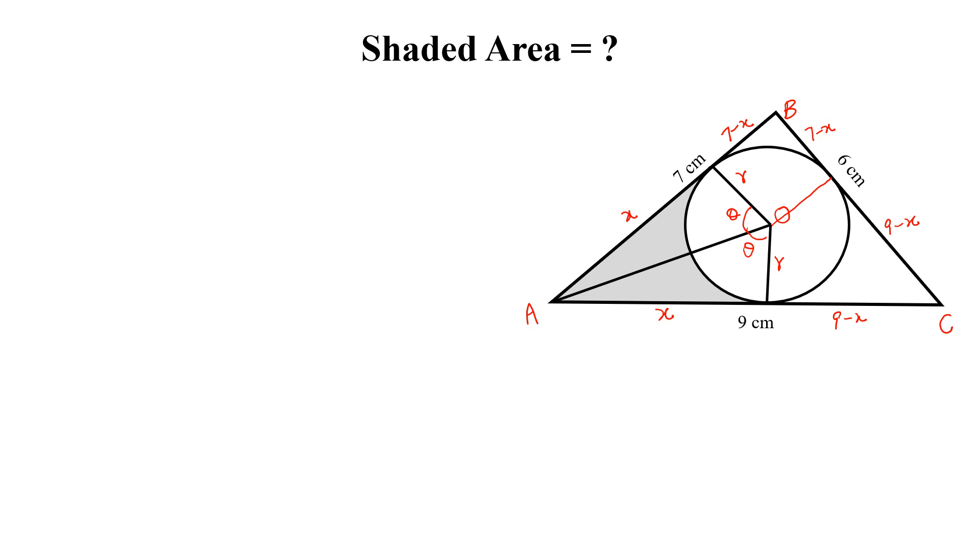Now, how can we calculate the shaded area? The shaded area, let the shaded area is A. The shaded area will be equal to 2 times the area of this right angle triangle, this triangle and this triangle, 2 times the area of this triangle, R into X minus the area of this sector of the circle. So, this is also 2 times theta by 2 into R square.